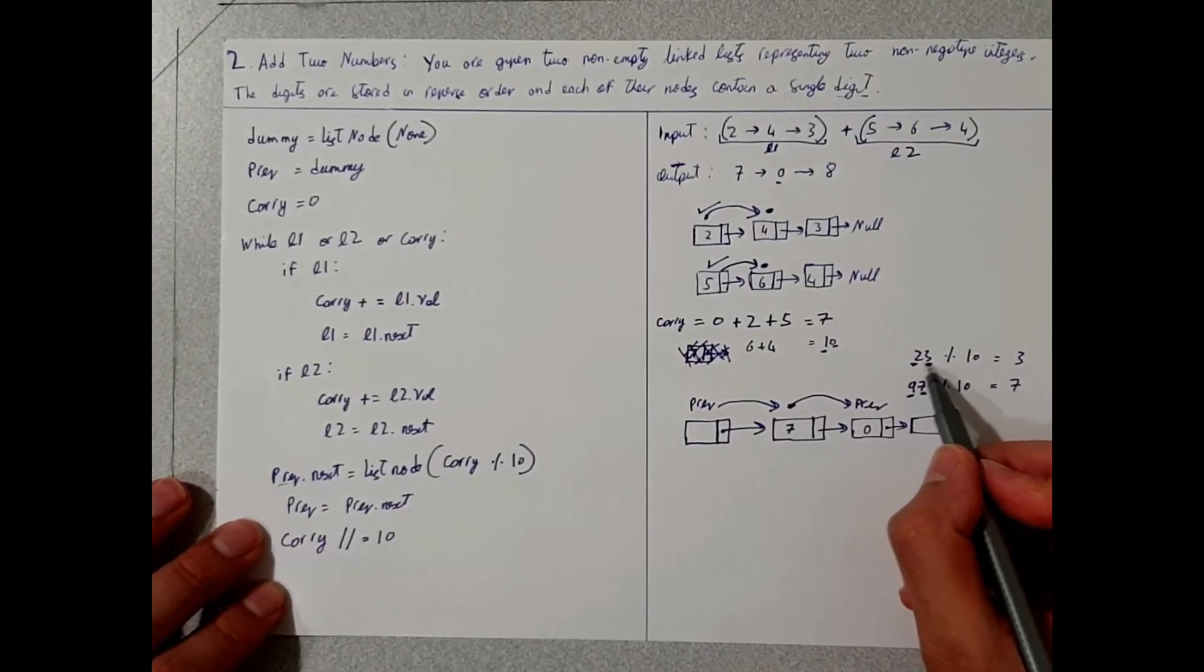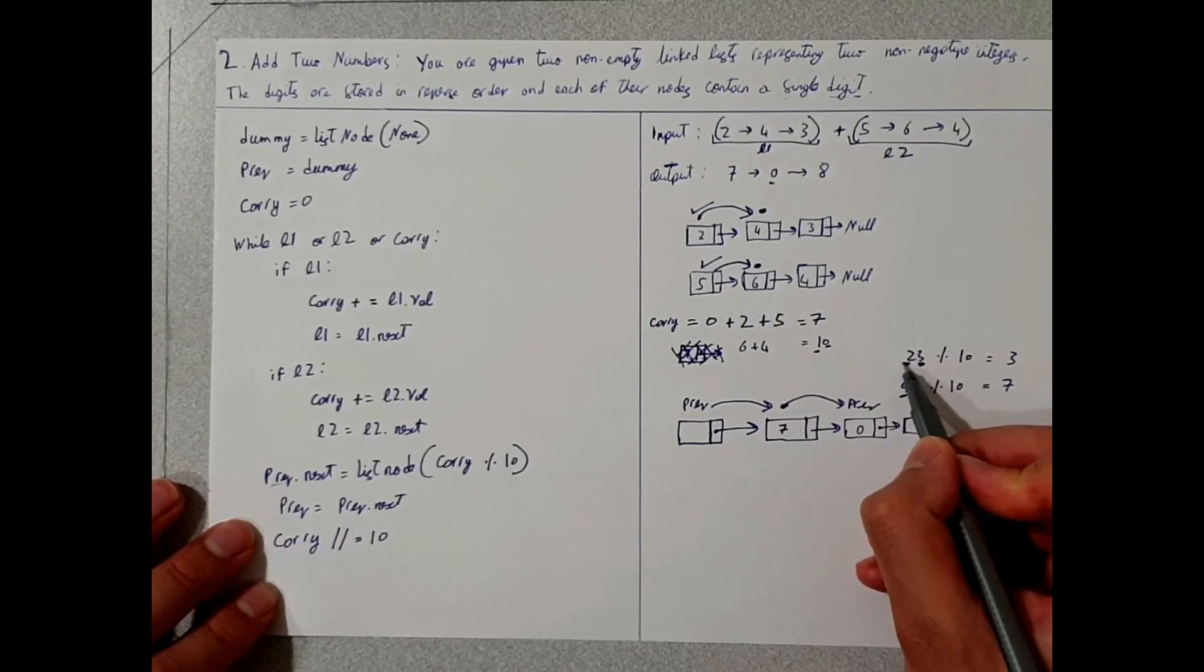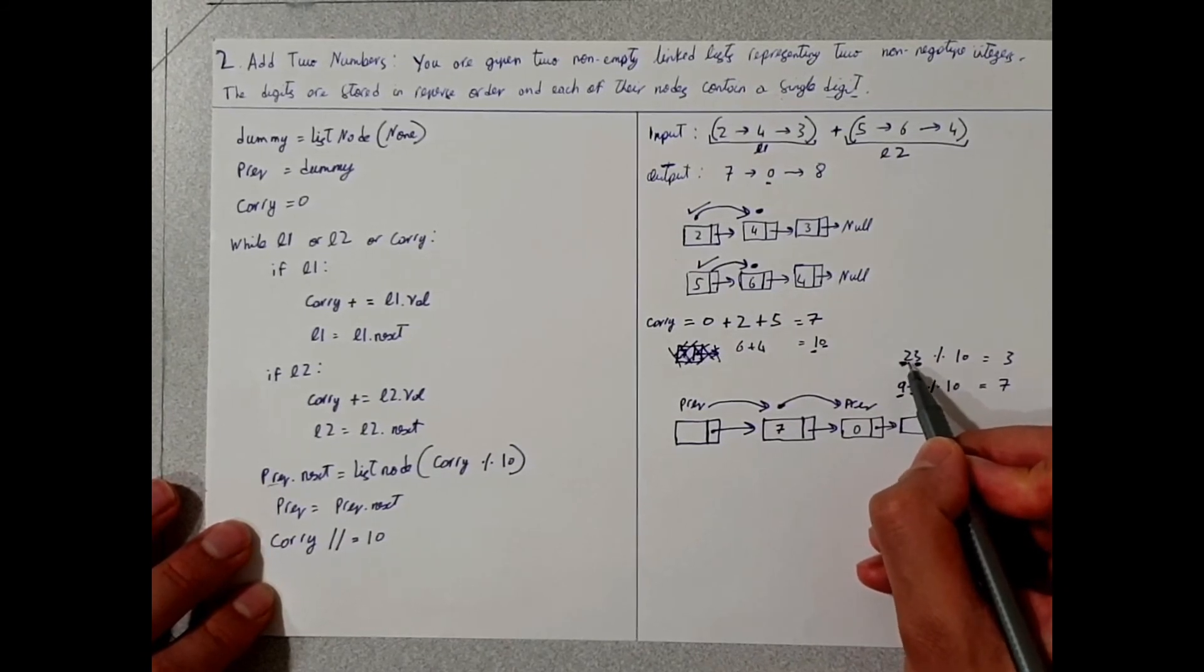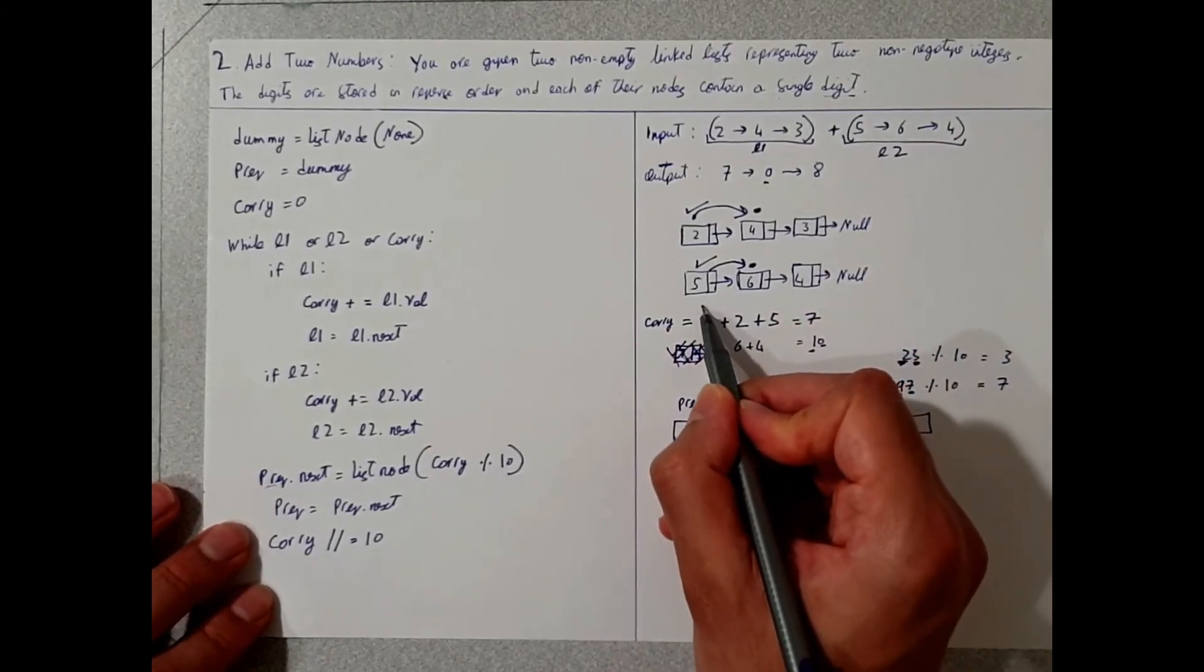So if we subtract 23 by 10, then 3 is the remainder and 2 is the actual value. And this is the value we want to store at carry.